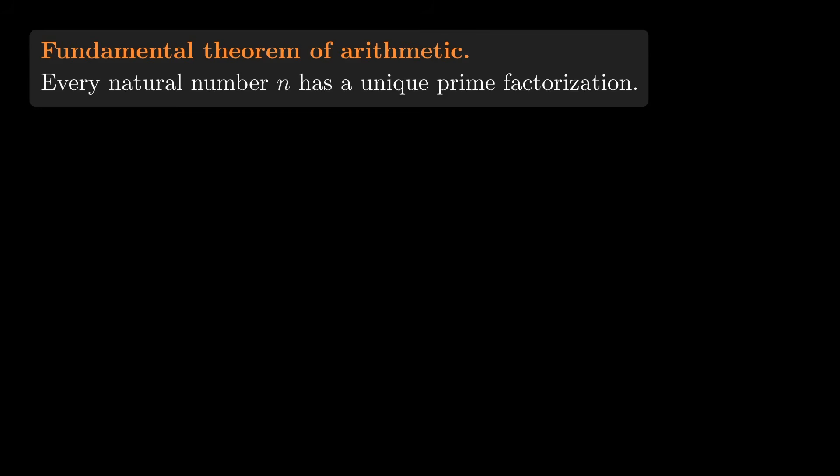Call our natural number n. n has some prime factorization, because if it's prime, then it has a prime factorization consisting of itself. And if it's not prime and not 1, then by definition it has a divisor that we can use to break it down, and we can continue breaking it down until we only have primes.